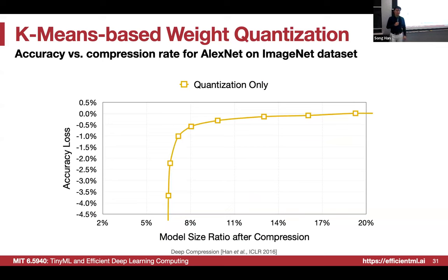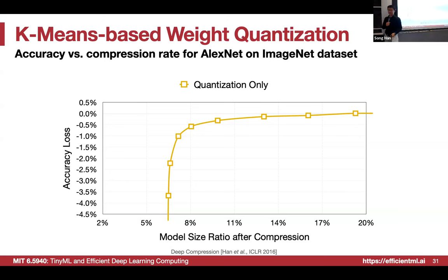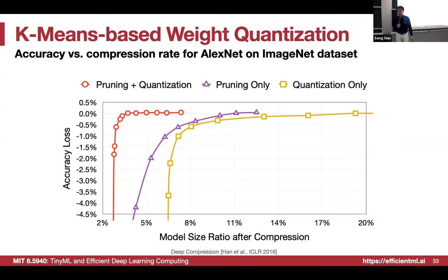How does accuracy change with K-means quantization? The model size ratio can go from around 20% down to 6%. With quantization alone, we can get to roughly 10% or below while maintaining accuracy. Pruning achieves a similar reduction (~10–12%). But pruning and quantization can be combined in a friendly manner to push the frontier further — making the model even smaller while maintaining accuracy.